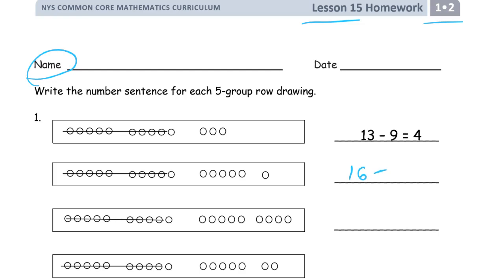There are nine crossed out. We can tell because there's one left from these two five groups. So nine crossed out, and we can see six and one more — seven is left.